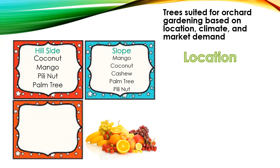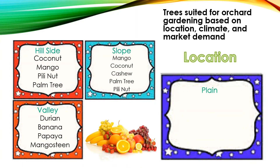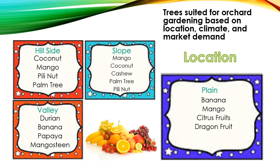If your place is in a valley, you can plant durian, banana, papaya, and mangosteen. If you are on plains, you can plant banana, mango, citrus fruits, dragon fruit, jackfruit, and guava. So those are the recommendations based on location — don't rush into planting without enough knowledge.